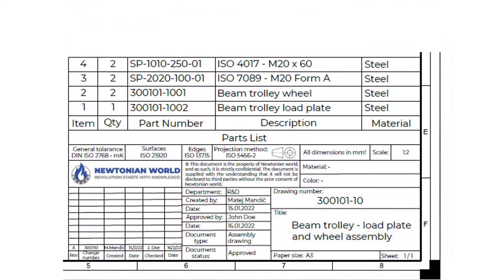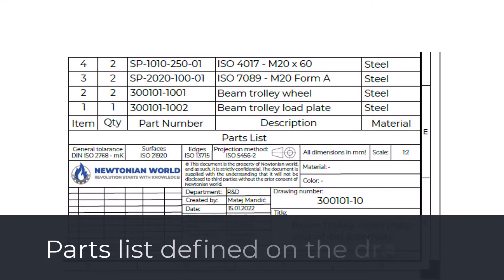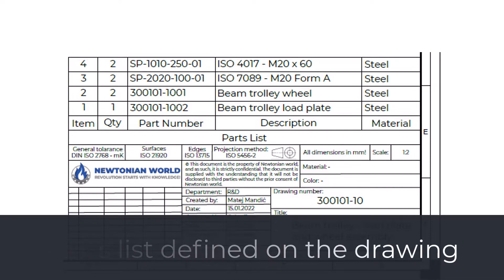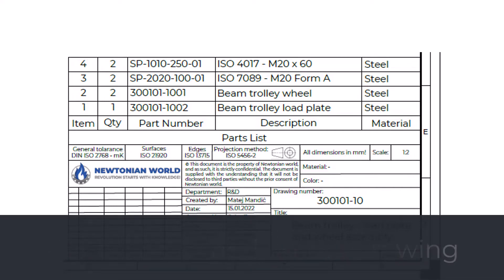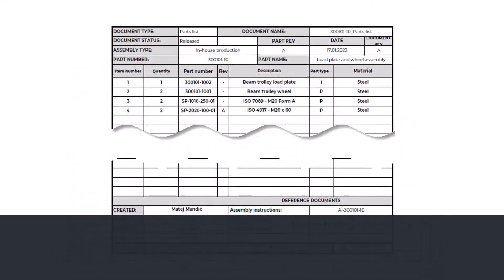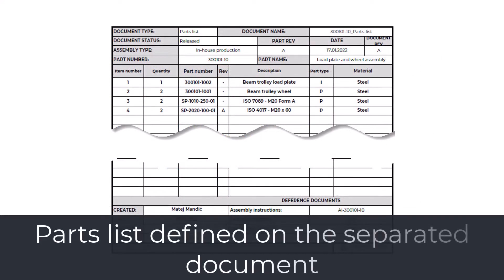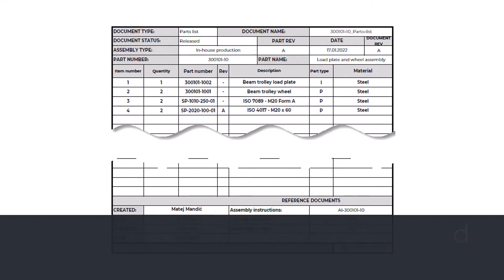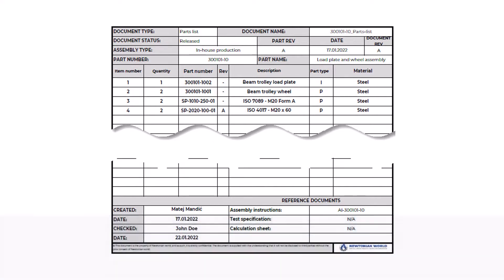The parts list defines the list of the object's elements. The parts list is added directly to the drawing or it can be provided with the assembly drawing as a separate list. The parts list shows only the top-level parts used to build the assembly. In addition, the parts list can be automatically extracted from the company's ERP or PDM system. With the part list, only one structural level is defined.